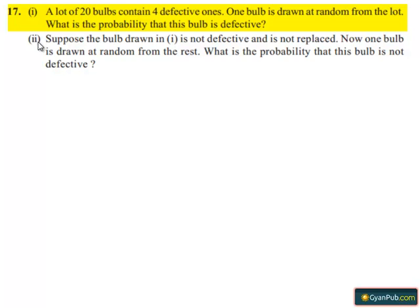Second bit: suppose the bulb drawn in the first part is not defective and is not replaced. Now one bulb is drawn at random from the rest. What is the probability that this bulb is not defective?